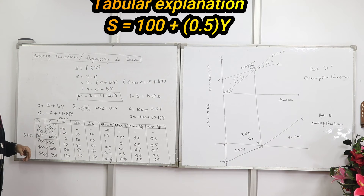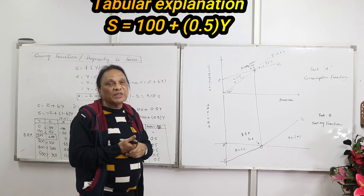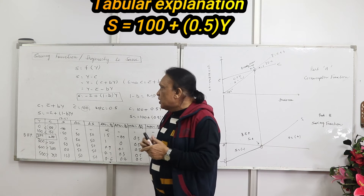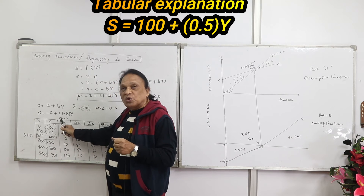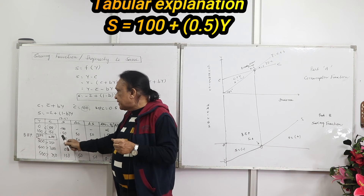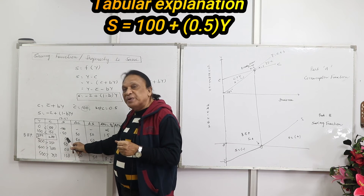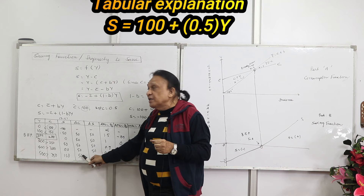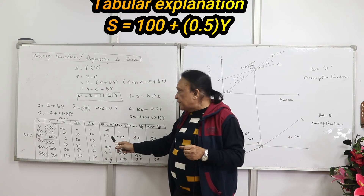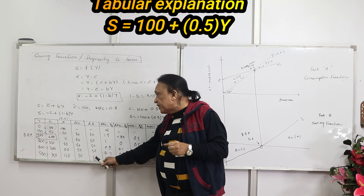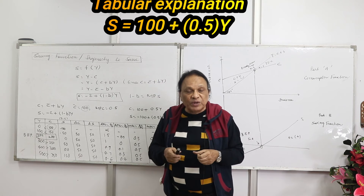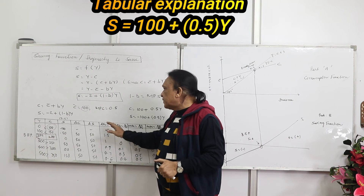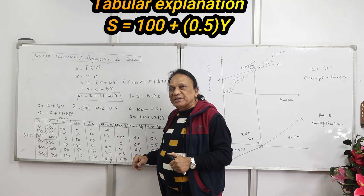Savings derived as S = Y − C gives values: −100, −50, 0, 50, 100, 150. At the break-even point, savings are zero. The change in consumption (ΔC) is constantly 50, and change in savings (ΔS) is also 50, because MPC = 0.5 and MPS = 0.5. Keep in mind: MPC + MPS = 1.